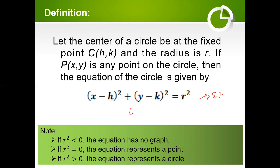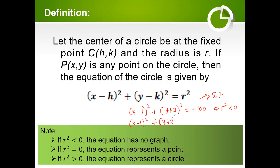For example, if we have (x minus 1)² plus (y plus 2)² equals negative 100, this means that r² is less than 0, so this equation has no graph. But if (x minus 1)² plus (y plus 2)² equals 0, then the equation represents a point rather — because there is no distance between C and P. That is just a mere point on your plane.